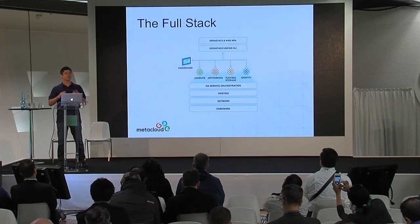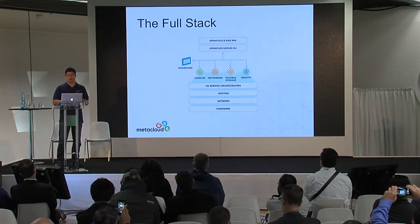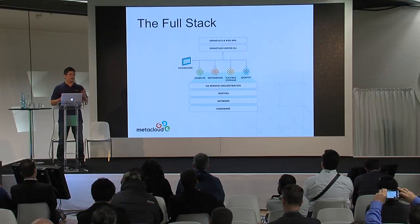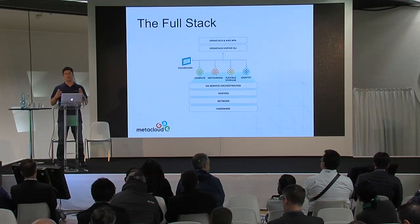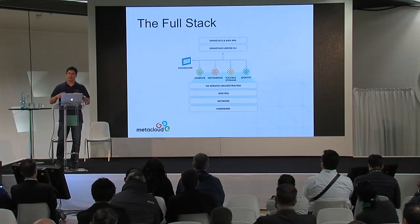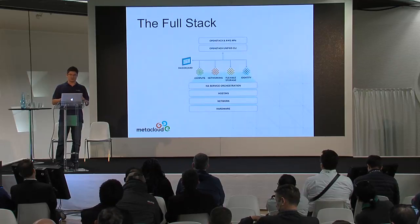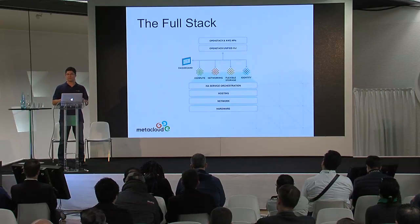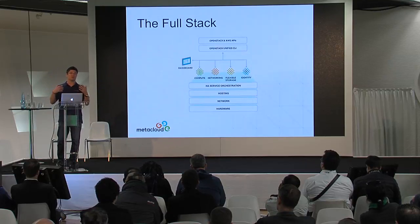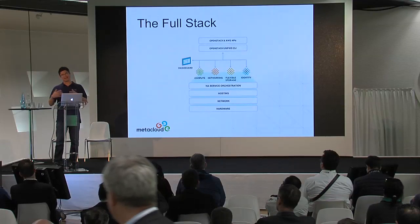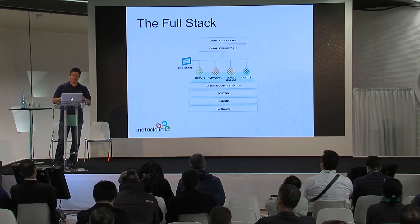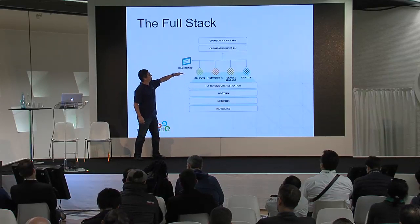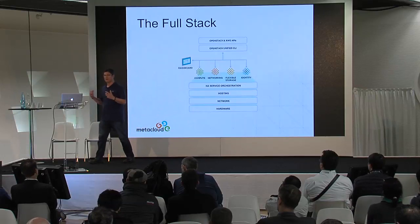You have hosting — the servers and the platforms, the operating system, kernel, and so on used to host these OpenStack services. Then you have high availability service orchestration, which is functionality that we add on top of our cloud. On top of that you have the virtualized cloud resources: compute, networking, storage, and identity. This is accessible either via the dashboard, OpenStack CLI, OpenStack APIs, or the OpenStack AWS APIs. From that layer down is what we manage, and from there up is our customer's view of their private cloud.